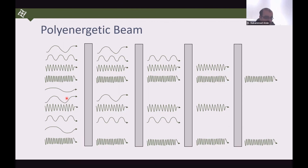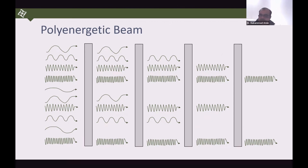Because of average energy and penetration power, high energy photons can penetrate more. When filtration is added, low energy photons are filtered out, leaving high energy photons. This improves the quality of the beam, but the quantity or intensity of the beam decreases.